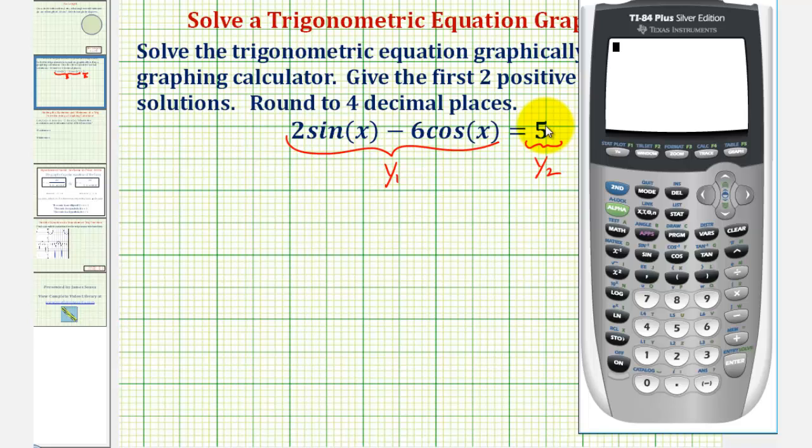We first want to verify that we are in radian mode. So we'll press the mode key. Notice how right now the calculator is in degree mode. So we'll arrow down to the third row and press enter when the cursor is blinking on radian. And now the calculator is in radian mode.